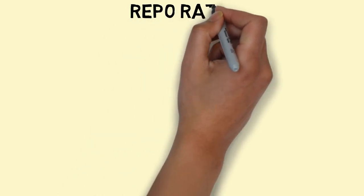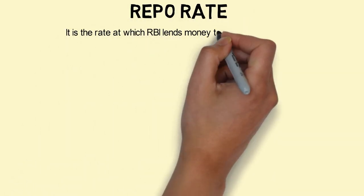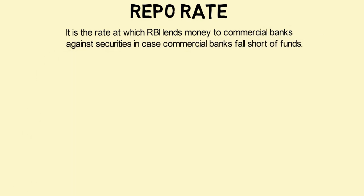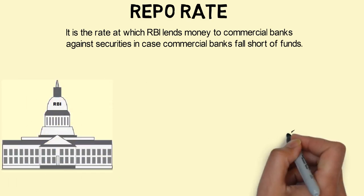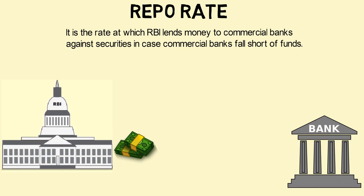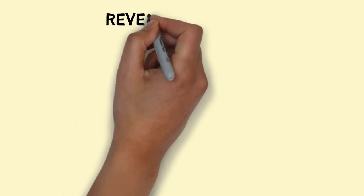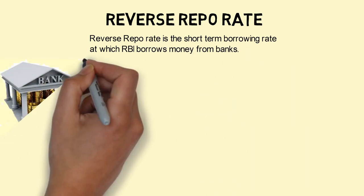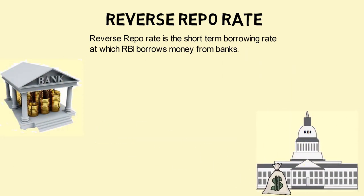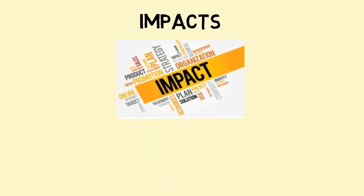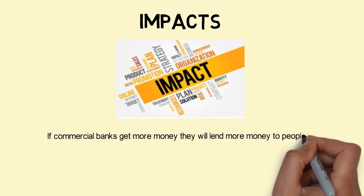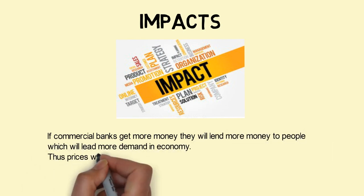The next tool is repo and reverse repo rates. The repo rate is the rate at which RBI lends money to commercial banks against securities. Commercial banks go to RBI whenever there is a shortage of funds. The reverse repo rate is the short-term rate at which RBI borrows money from commercial banks. If commercial banks get more money, they will lend more to people, leading to more demand and higher prices.